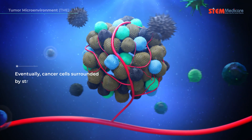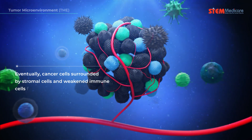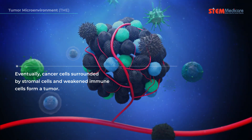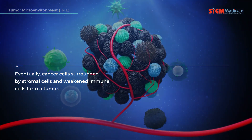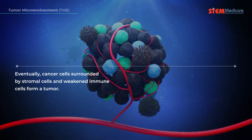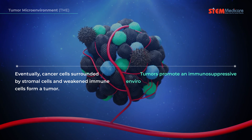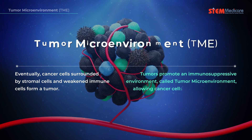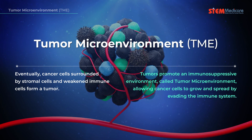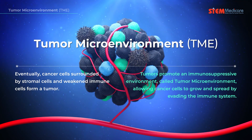Eventually, cancer cells surrounded by stromal cells and weakened immune cells form a tumor. Tumors promote an immunosuppressive environment, called the tumor microenvironment, allowing cancer cells to grow and spread by evading the immune system.